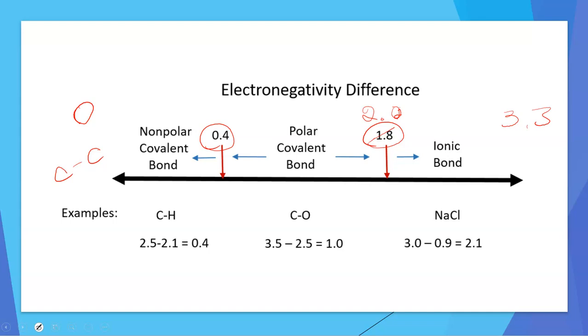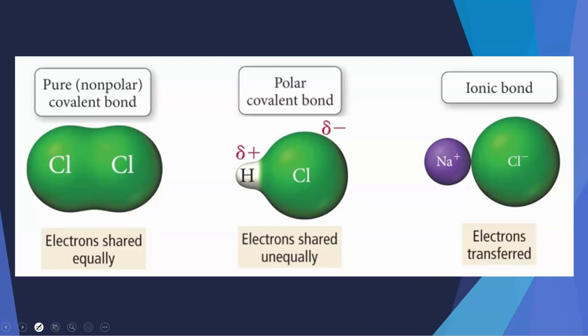Everything in between 0.4 and 2-ish, we consider to be a polar covalent bond. So that means that our electrons are spending more time on the more electronegative element atom than on the less electronegative atom. Let me show you a diagram that hopefully will clear that up a little bit.